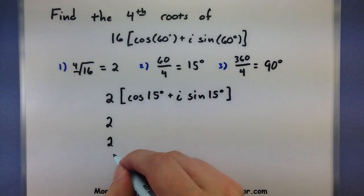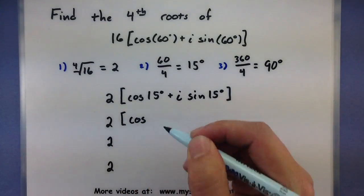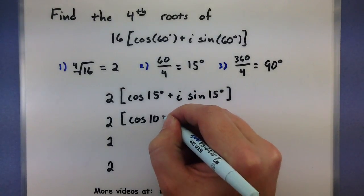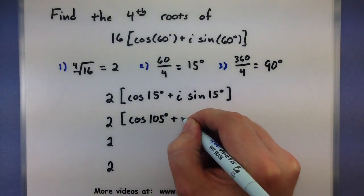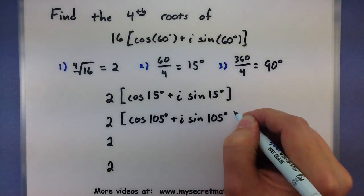So, 2, 2, 2. And now we're going to go through and add 90 degrees for every other one. 15 degrees plus 90 degrees, that'd be 105 degrees. 105 degrees.